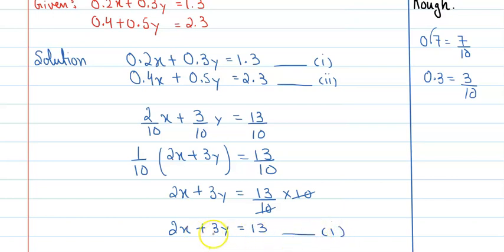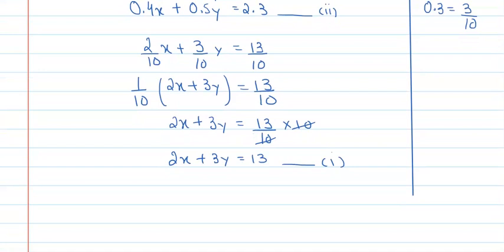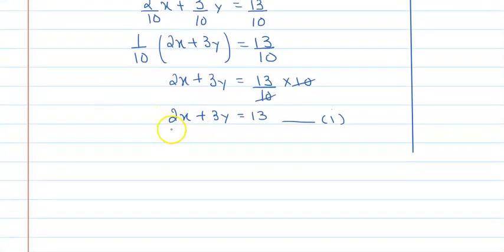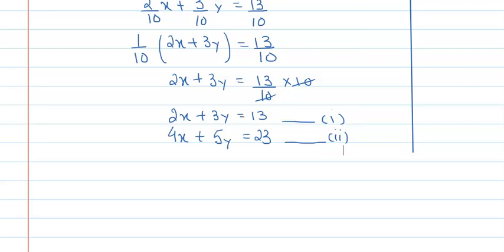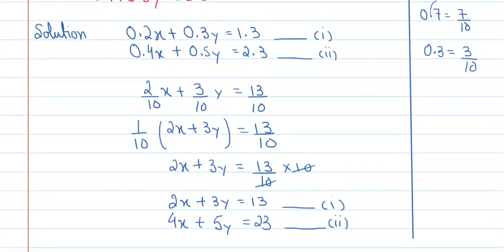Similarly, जो second equation आपको दी हुई है, आप directly second equation भी लिख सकते हैं। तो second equation क्या हो जाएगी? 4x plus 5y equal to 23. And it is the second equation. तो अब एक बार देख सकते हैं हमारी given equations को: 4x plus 5y equal to 23.